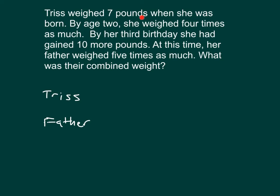It says that Triss weighed seven pounds when she's born. So there she is, when she's born, weighing seven pounds. By age 2, she weighed four times as much. Four times as much as seven. How many sevens? Four of them. So by age 2, this is how much she weighed. Four sevens, or four times seven, which is 28.